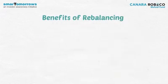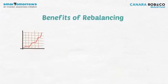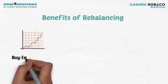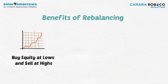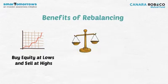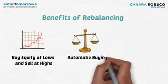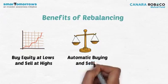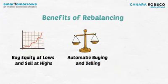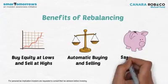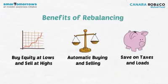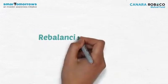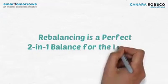The rebalancing feature of balanced funds helps to buy more equity at lower levels and sell when the market is high. It also automates the process of buying and selling for the investor. Additionally, it saves on taxes and exit loads, which adds to the overall returns to the investor. Rebalancing is a perfect two-in-one balance for the investor.